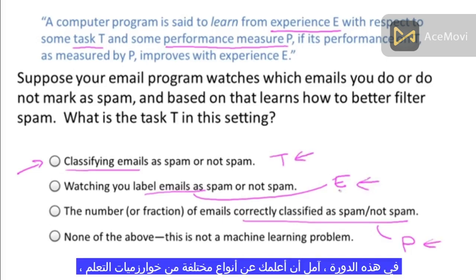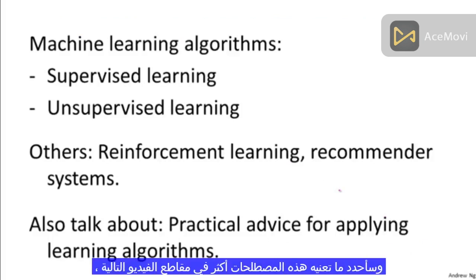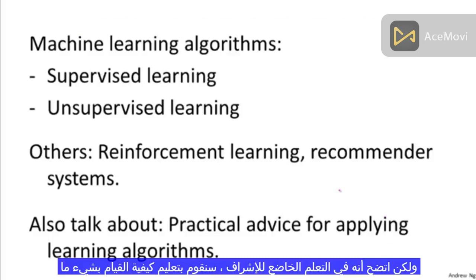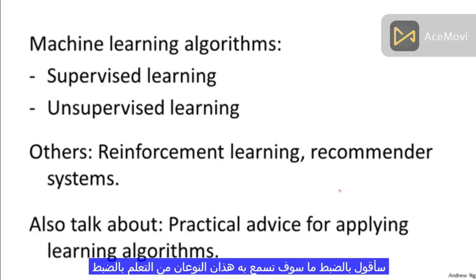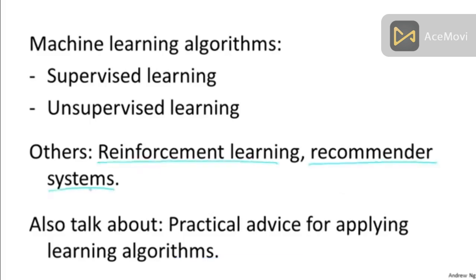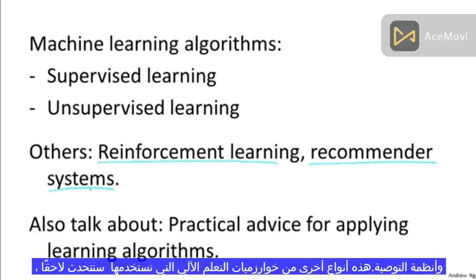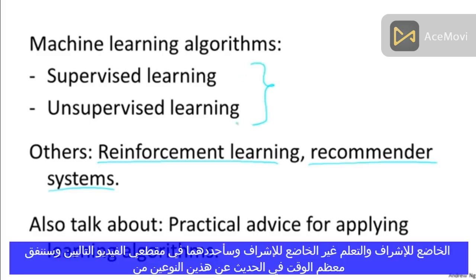In this class, I hope to teach you about various different types of learning algorithms. The main two types are what we call supervised learning and unsupervised learning. In supervised learning, the idea is we're going to teach the computer how to do something, whereas in unsupervised learning, we're going to let it learn by itself. In the next two videos, I'm going to define exactly what these two types of learning are. You might also hear other buzzwords such as reinforcement learning and recommender systems, but the two most used types of learning algorithms are probably supervised learning and unsupervised learning, and we'll spend most of this class talking about these two.